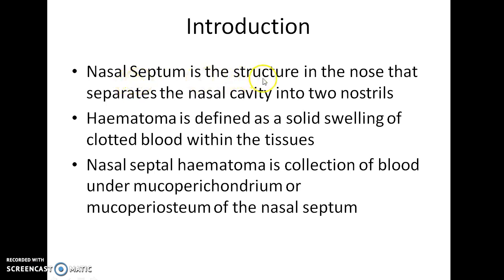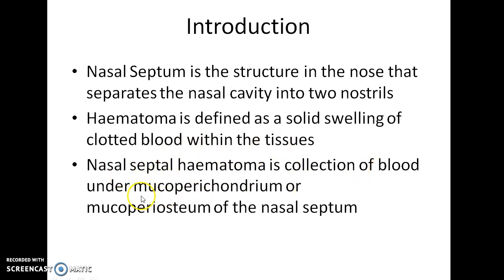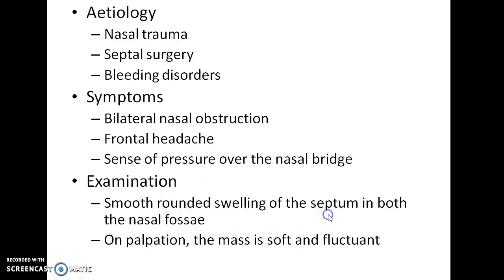The nasal septum is the structure in the nose that separates the nasal cavity into two nostrils. A hematoma is defined as a solid swelling of clotted blood within the tissues. Thus, nasal septal hematoma is a collection of blood under the mucoperichondrium or mucoperiosteum of the nasal septum.